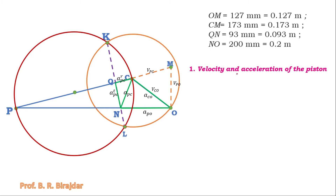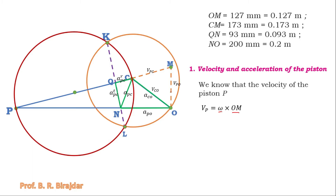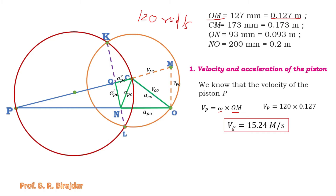First, they ask for the velocity and acceleration of the piston. Velocity of piston P equals omega multiplied by the O to M distance. O to M is 0.127 meter and omega is 120 radian per second. So velocity of P equals 120 × 0.127 = 15.24 meter per second.